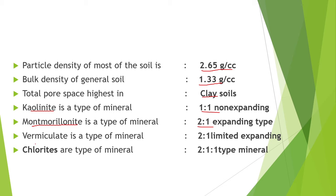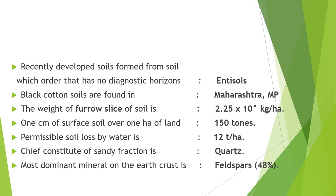Next point is vermiculite. Vermiculite is a 2:1 but limited expanding type of mineral. Next point is, chlorites are a type of 2:1:1 type mineral, consisting of 2 silica, 2 magnesium and 1 alumina. Next point is, the recently developed soil with no diagnostic horizon is entisols.